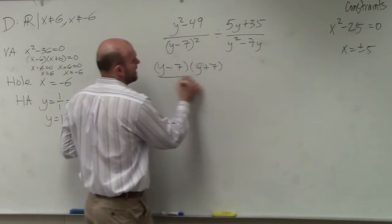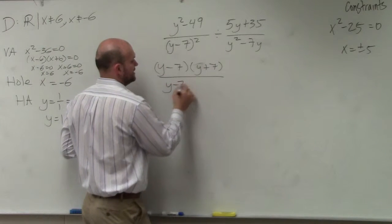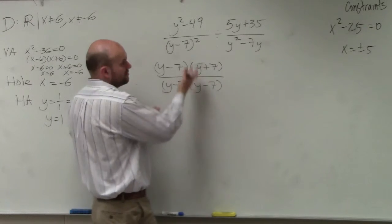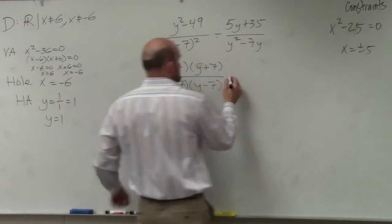This goes into that. y minus 7 squared, in reality, is y minus 7 times y minus 7. x squared is x times x, so y minus 7 squared is y minus 7 times y minus 7.